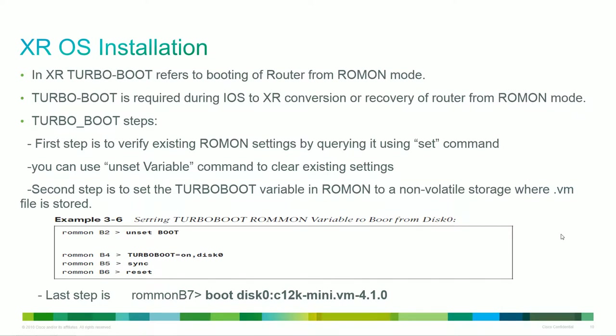So how do we install it? For the installation, we go into our MON mode. Normally we can do things for turbo boot, which is essentially booting the router from MON mode for faster functionality. Once we set it to boot from MON mode, we tell it where we're going to be booting from. You go in and tell it to boot — set where it's located. For example, unset boot, turbo boot on disk zero, sync it, then reset. Tell it to boot from disk zero, then tell it what PIE to load.